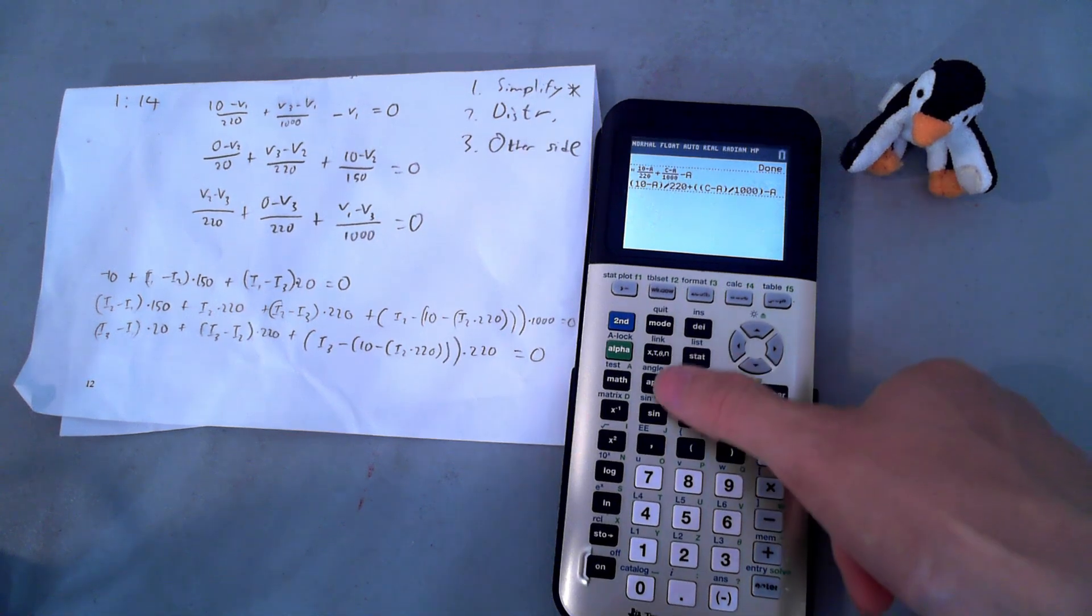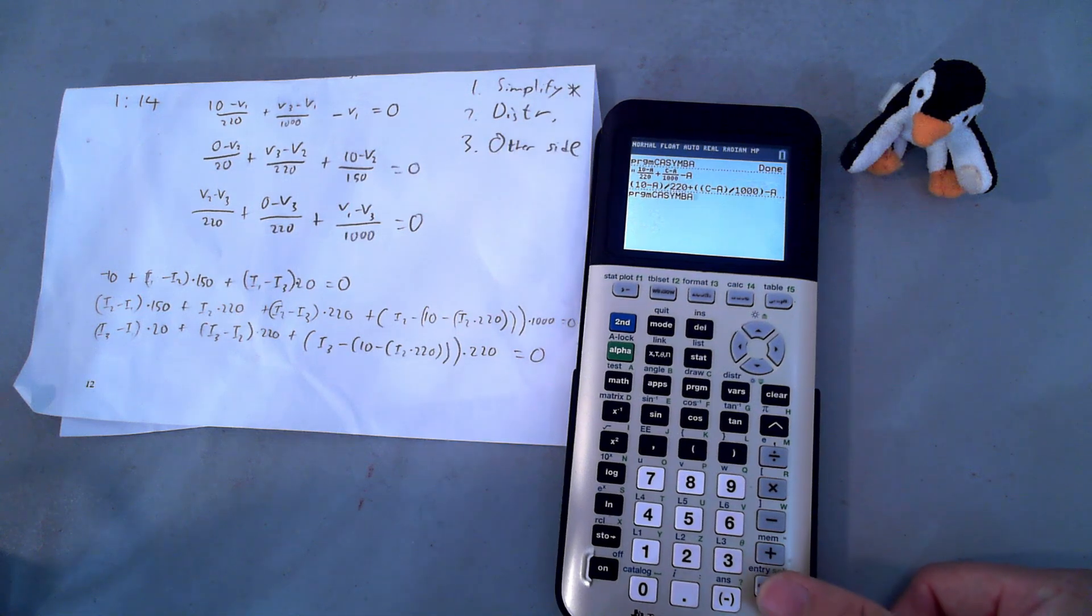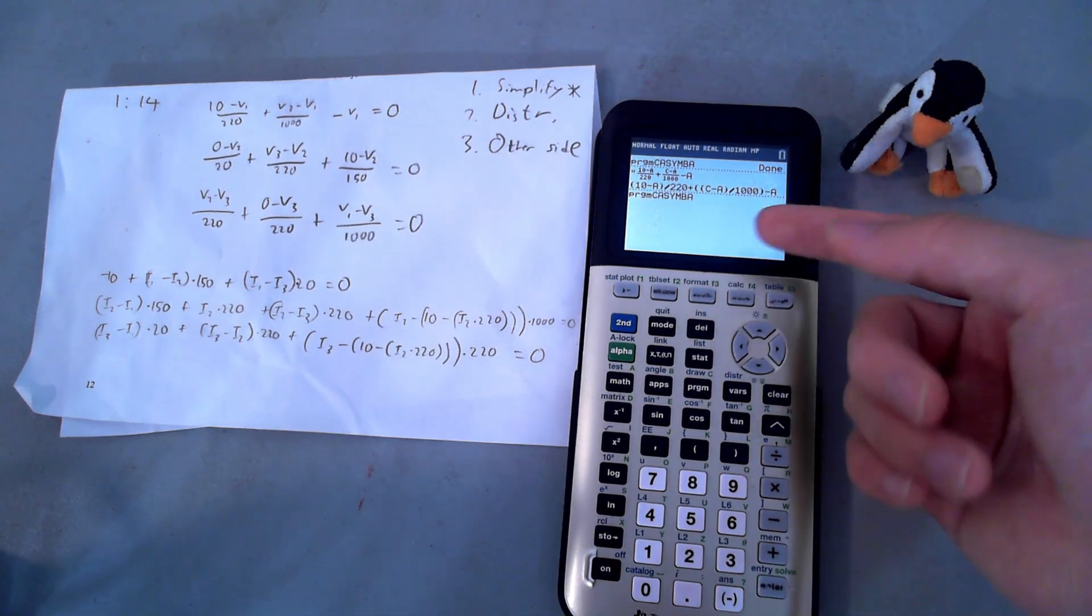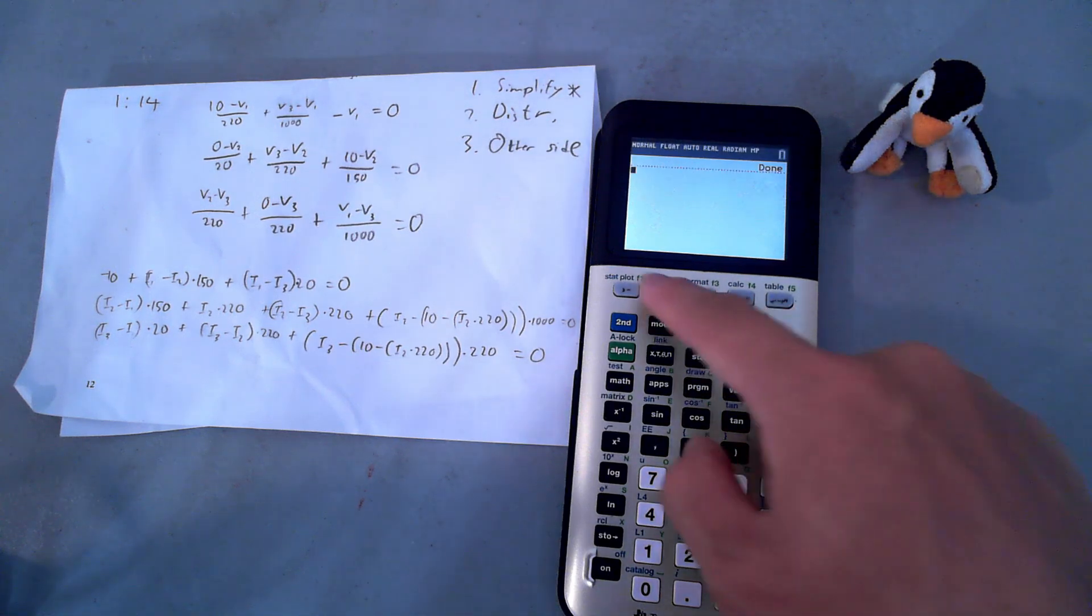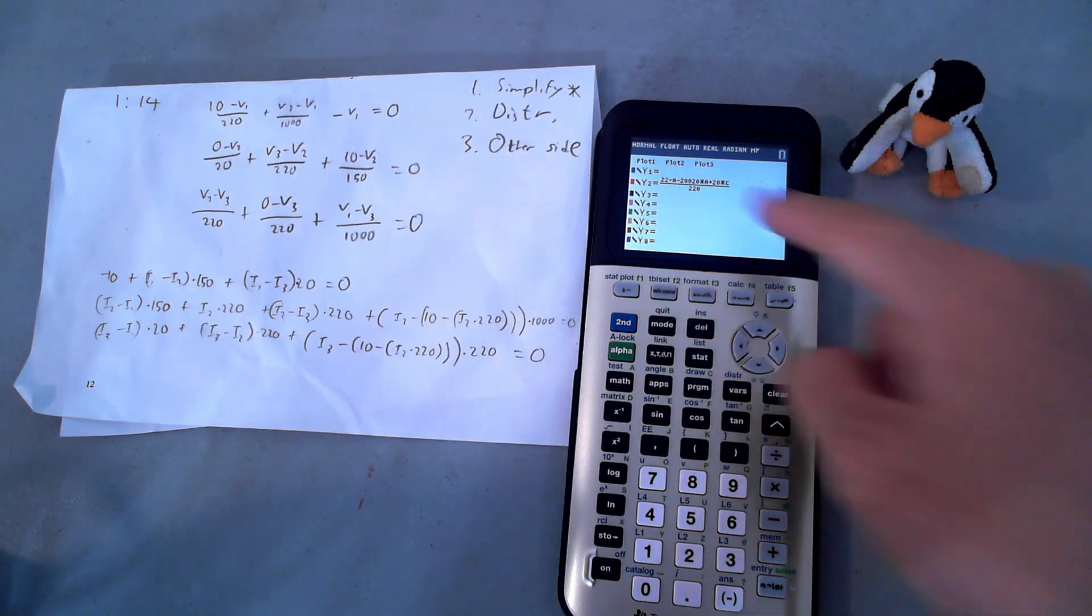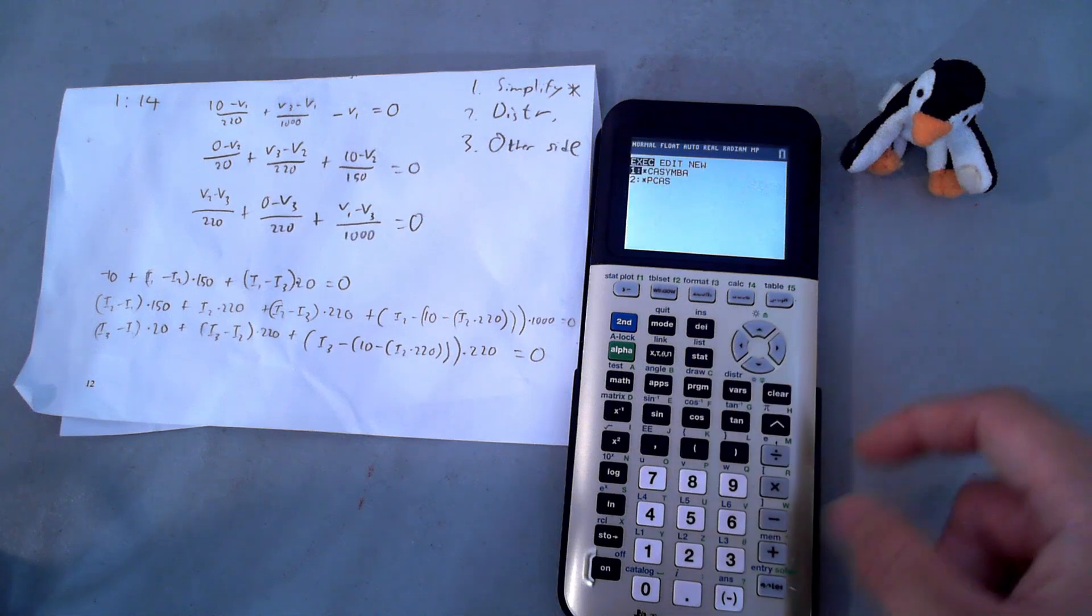And now we're going to go ahead and run Kasimba. Now, Kasimba can only read strings from this line. You'll see it in the documentation in the description of this video. But you'll see that it can only read strings. So this is a valid instruction for Kasimba. It's just reading it from the answer. And once we run it, it's actually going to be placing the answer inside Y2.